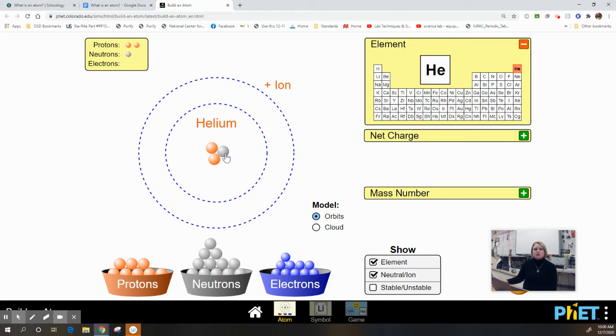I can also figure out what's called the mass number by clicking this button. And it says the mass number of this particular element is going to be 3 because I've got two protons plus one neutron makes a mass number of 3. Protons plus neutrons equals mass number.